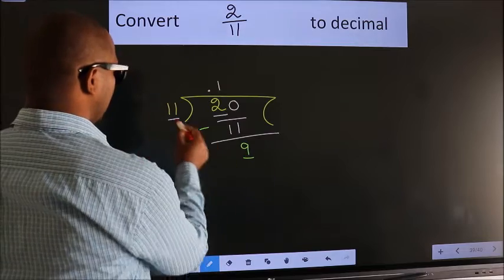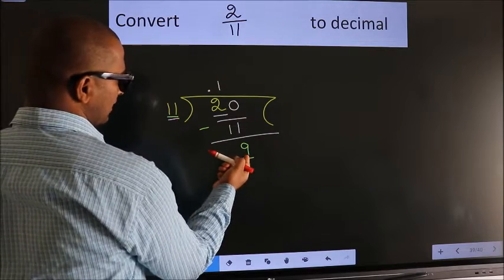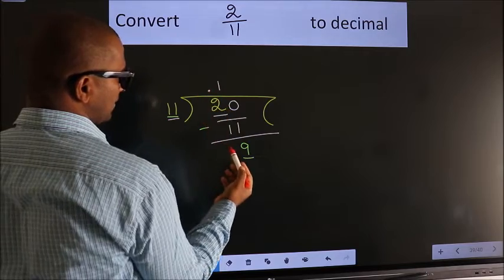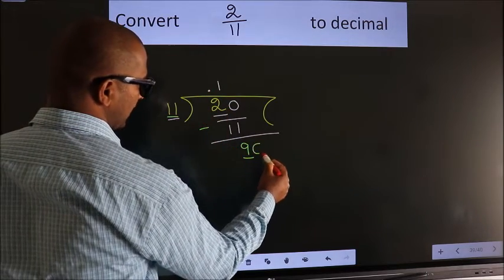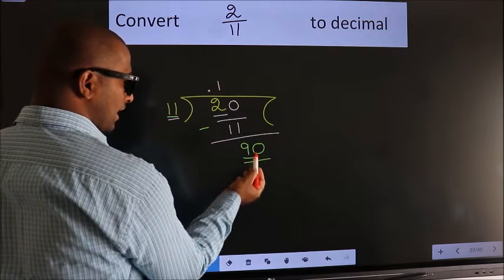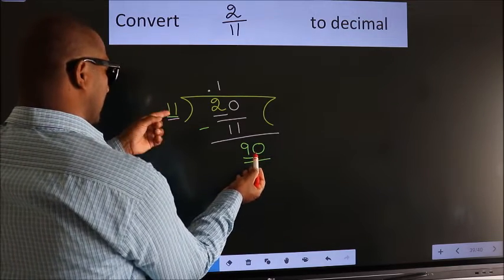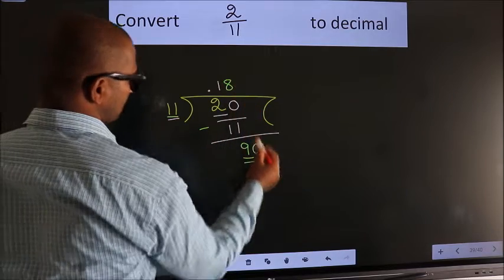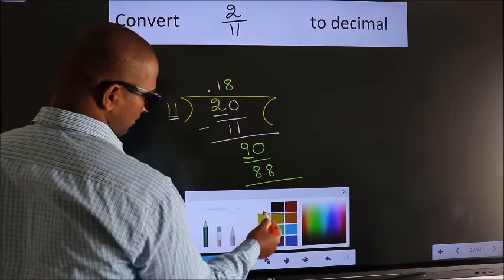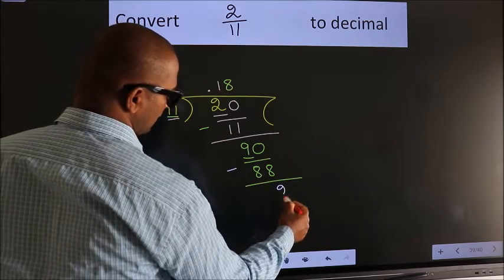Here we have 9, here 11. 9 is smaller than 11, we already have the decimal so we can directly take 0, so 90. A number close to 90 in 11 table is 11 times 8, 88. Now we subtract, we get 2.